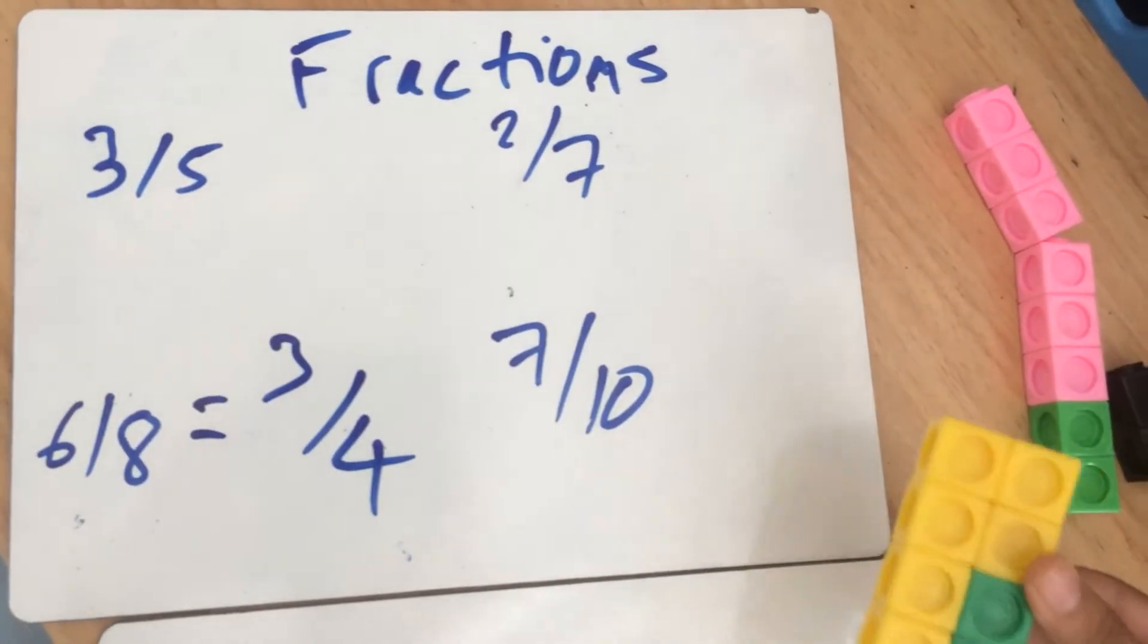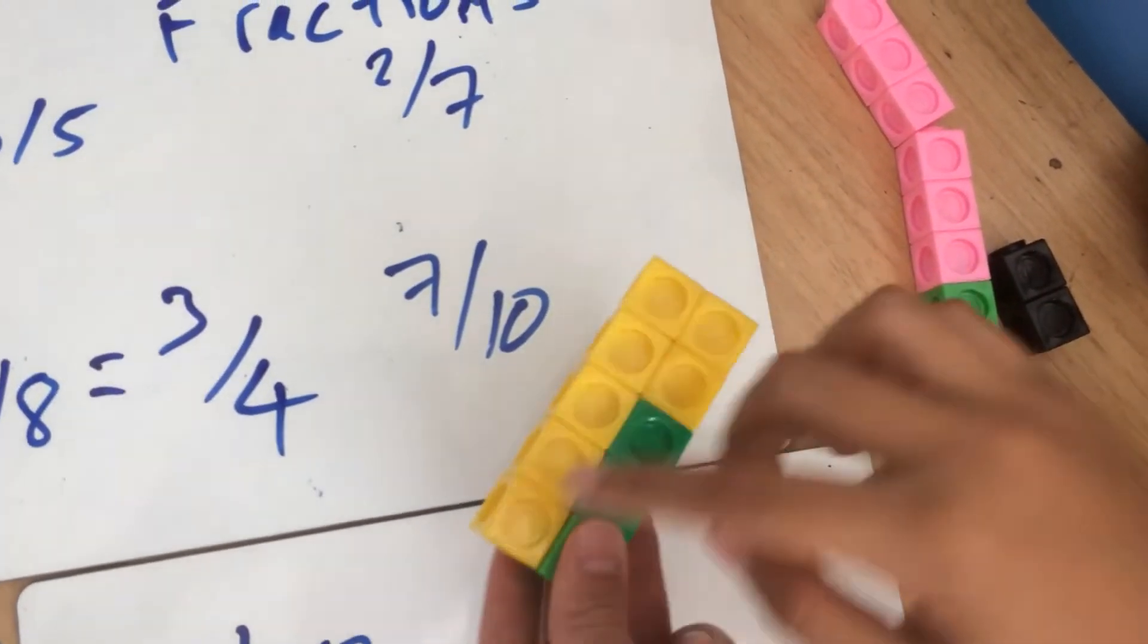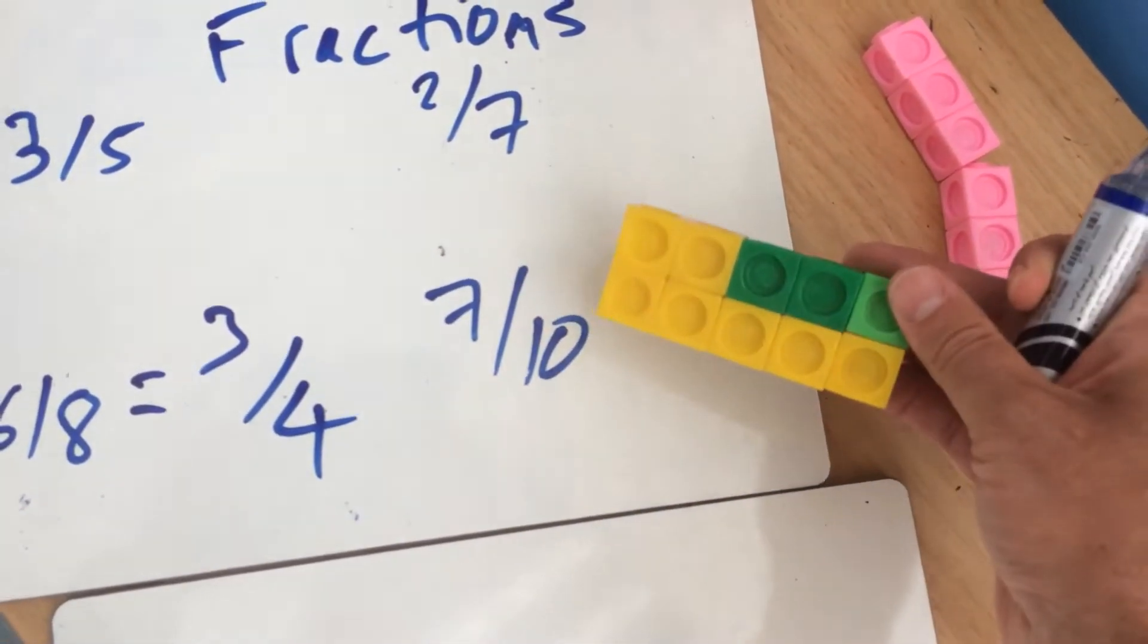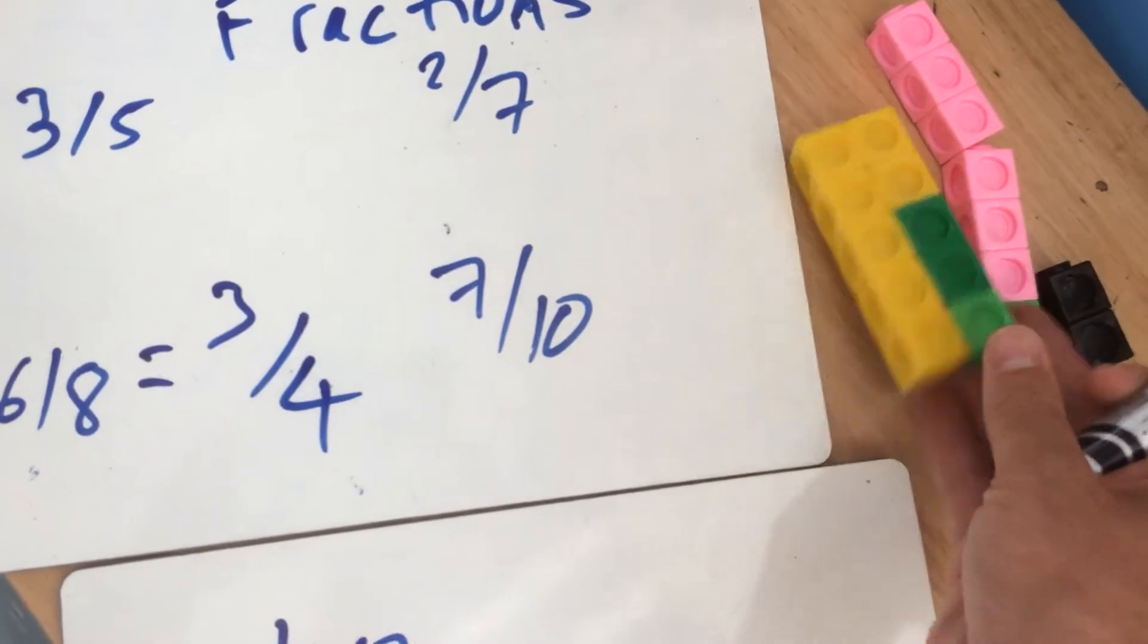Do we have seven tenths? Here we have seven yellow cubes out of ten in total. Out of ten in total. So we've got seven out of ten. Brilliant. Okay.